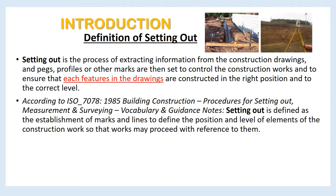According to ISO 7078:1985 Building Construction — Procedures for Setting Out, Measurement and Surveying: Vocabulary and Guidance Notes, Setting Out is defined as the establishment of marks and lines to define the position and level of elements of the construction work so that works may proceed with reference to them.